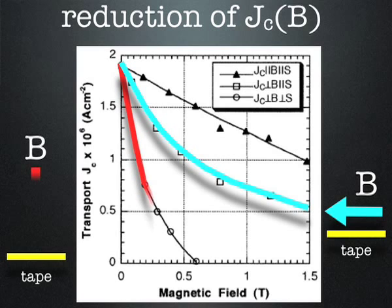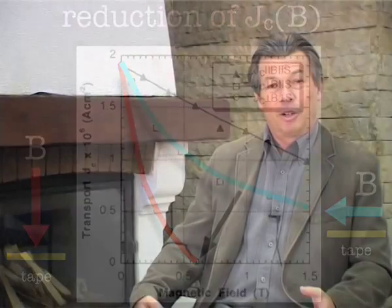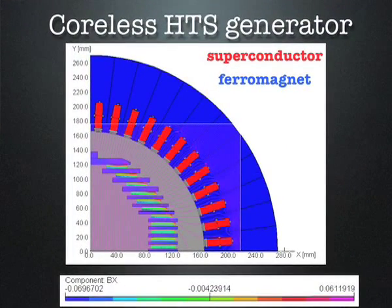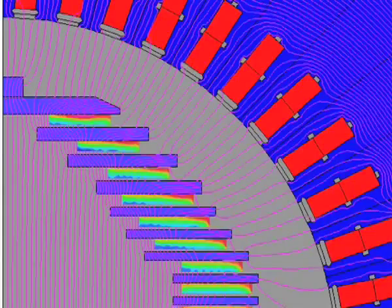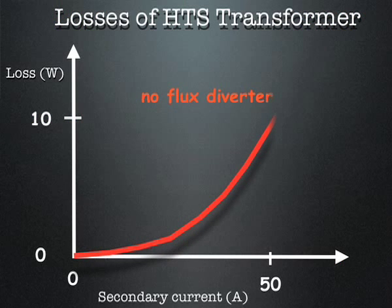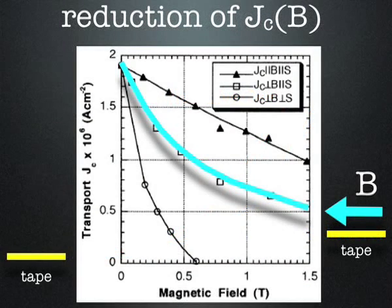HTS tapes have anisotropic properties. If the field is in the perpendicular direction to the broad face of the tape, then the critical field is much lower. This is a challenge, this is a problem, because the field in the machine will go where it wants to go. So, the challenge for the designers is to force it to go in the direction which we want it to go. And that gives rise to a rather clever idea of using so-called flux diverters. This has been used in transformers and generators as well. The flux diverters simply force the field to go in a particular direction, and this is our preferred direction which is parallel to the broad face of the tape.